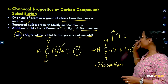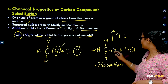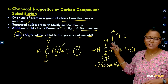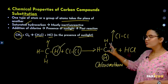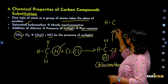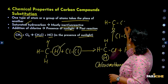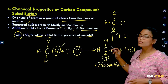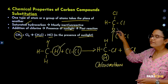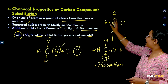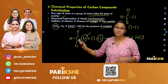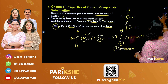Chloromethane in the presence of sunlight can react further. One of the remaining hydrogen atoms is replaced again by chlorine to give dichloromethane. The reaction can continue to give trichloromethane, and finally tetrachloromethane when all four hydrogen atoms have been substituted. This is how substitution reaction takes place.